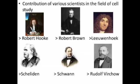On the basis of number of cells, organisms are divided into two types: unicellular and multicellular. Unicellular organisms are those which have only one single cell, whereas multicellular organisms are those which have more than two cells. An example of a multicellular organism is a human being, whereas an example of a unicellular organism is Amoeba.